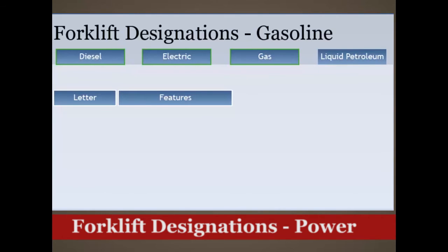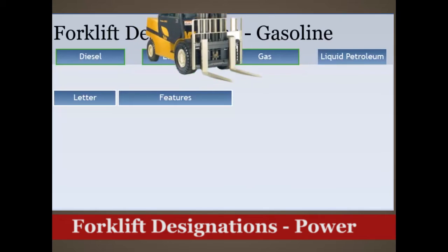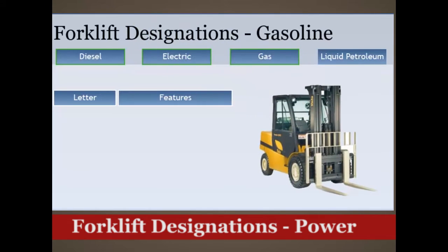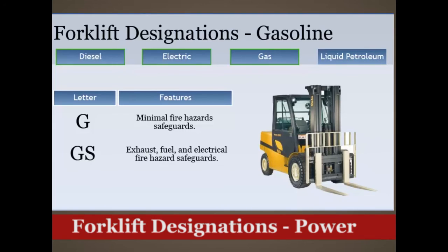Gasoline forklifts have two sub-designations. G type forklifts have minimal fire hazard safeguards. GS type forklifts have exhaust, fuel, and electrical fire hazard safeguards.